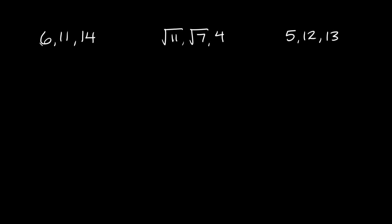Let's start with this one right here. We have a triangle with three side lengths 6, 11, and 14. Would these three side lengths form an acute, obtuse, or right triangle? The way that you check that is by using the Pythagorean theorem — a squared plus b squared is equal to c squared.